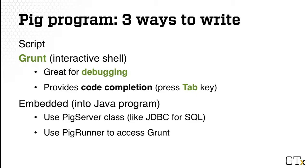There are three ways to write PIG programs. The first one is as scripts. The second is through a command prompt interactively. We'll look at an example of how to do that in a later video. PIG's interactive shell is called Grunt, and like any interactive programming, it's great for debugging. Grunt also has a very nice feature of code completion. The third way is as an embedded program within a larger code base.